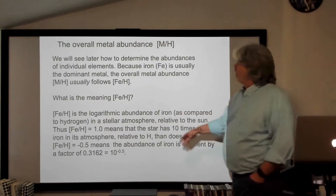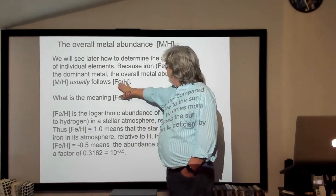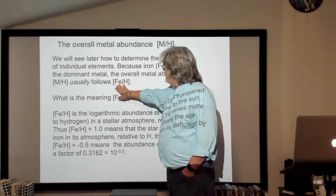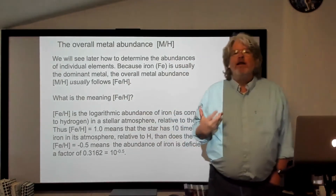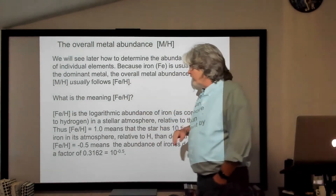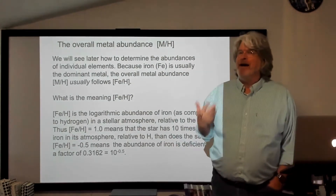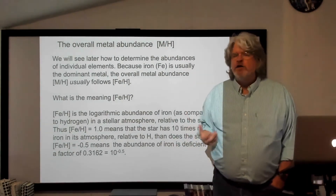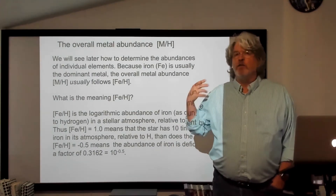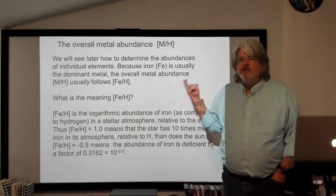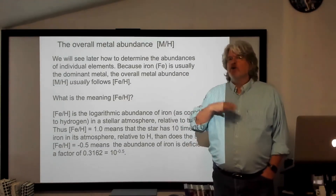If you're talking to someone and they talk about the iron abundance of a star, they'll often use this bracket Fe over H notation. What this means is it's the logarithmic abundance of iron with respect to hydrogen in the star you're talking about, relative to the sun. Here we're talking about number abundances. You need to be careful because sometimes people talk about mass abundances — how much hydrogen makes up the sun by mass is about 74%, but if we look at particles instead, about 92% of the particles that make up the sun are hydrogen.